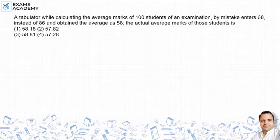A tabulator while calculating average marks of 100 students of an examination, by mistake entered 68 instead of 86 and obtained the average as 58. The actual average mark of those students is - क्या क्या रहा है question में